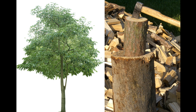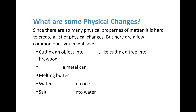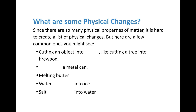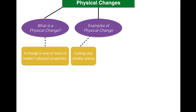For example, we have a tree on the left and firewood on the right. Are they both still wood? Absolutely. So what we have is a change in shape or change in size — that's the first of several physical changes. Cutting an object into pieces, like cutting a tree into firewood, is one example. If you have a block of cheese and chop it into slices, those little slices are still cheese — no new substance is made, so it's just a physical change.